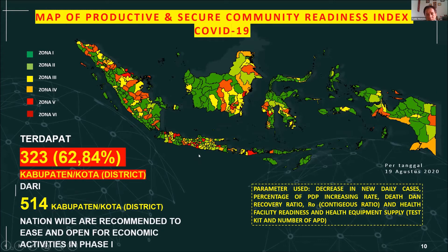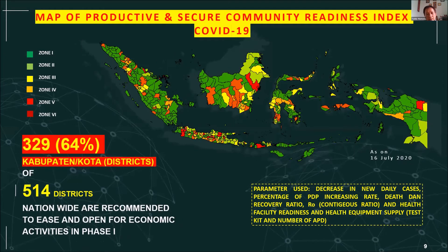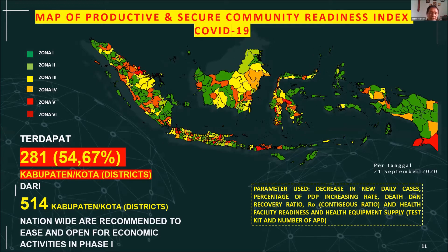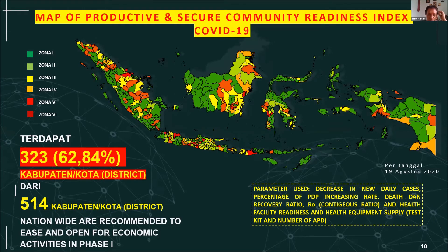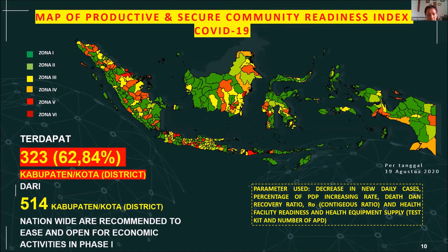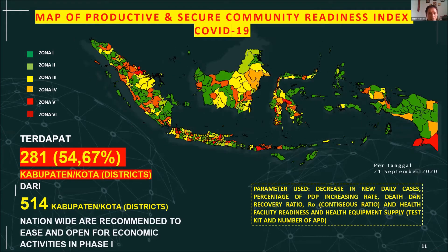Back on July 16, around 329 districts — about 64% — were in lockdown situations. On August 19, the number decreased slightly. But from the data 10 days ago, September 21st, the number of districts allowed to do productivity decreased again. So we went from 329 districts allowed to do business, to 329 after one month, then only 281 after another month. We are in a worrying situation.